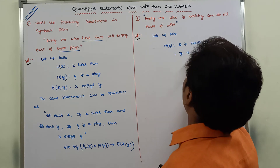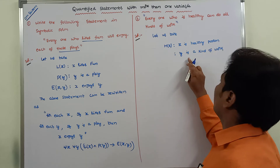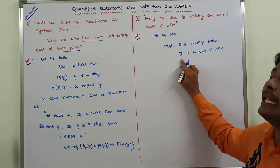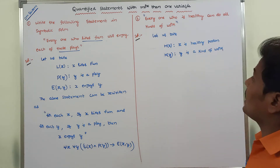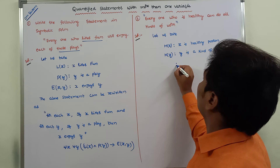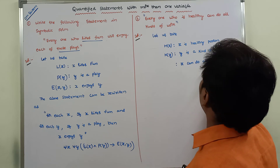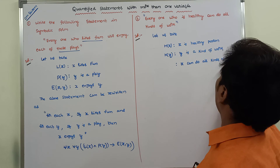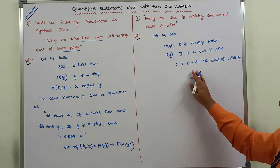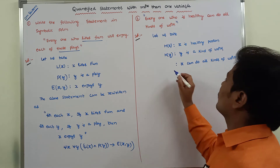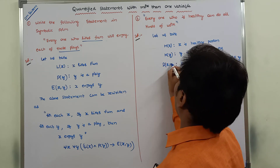Third, 'x can do all kinds of work', which simplifies to 'x can do y.' The predicate 'can do all kinds of work' is denoted by D, so this is written as D(x, y). The above statement can be rewritten as: for all x, if x is a healthy person, and for all y, if y is a kind of work, then x can do y.